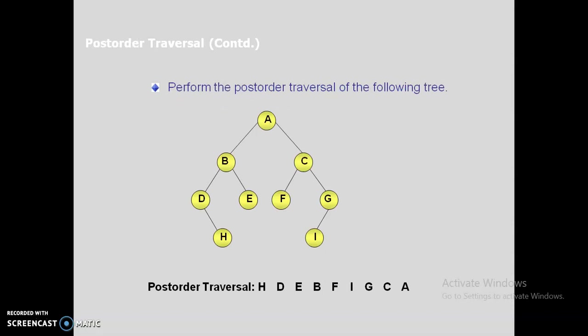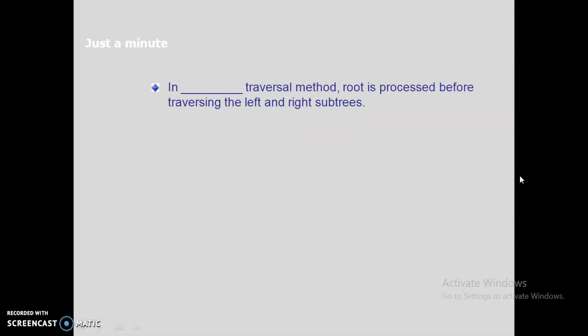The traversal is complete. I will explain the algorithm in the next video, so go through this and do some more examples. Quiz question: in which traversal method is the root processed before traversing the left and the right subtree? It is very simple. Thank you, dear students.